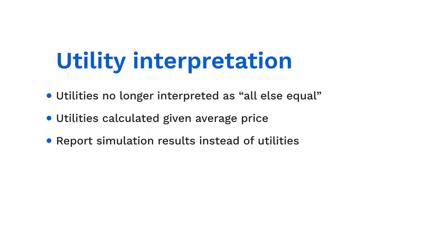Now that we have this set up, there are a few considerations to mention in the analysis phase. After incorporating conditional price, we can no longer interpret the part worth utilities calculated as holding all else equal, since the utility for each court type is now calculated given its average price. One approach to get around this issue is to focus your reporting on simulation and sensitivity analysis results, rather than on the utilities themselves.